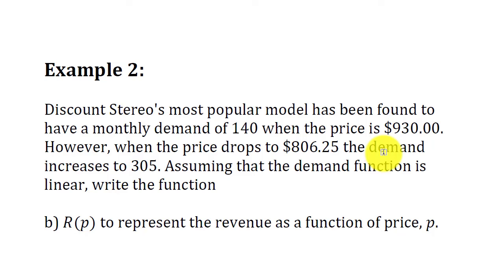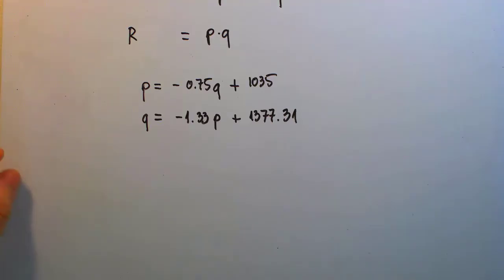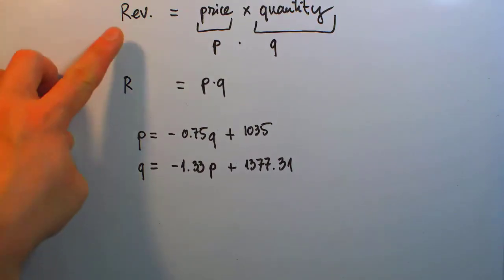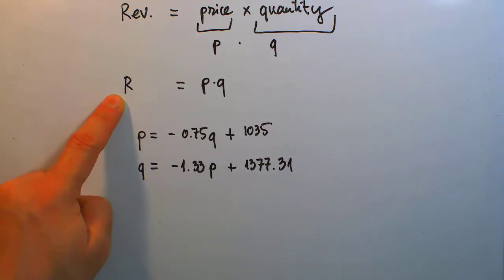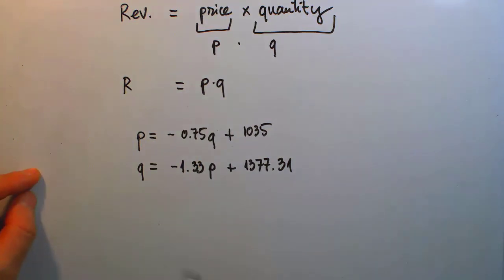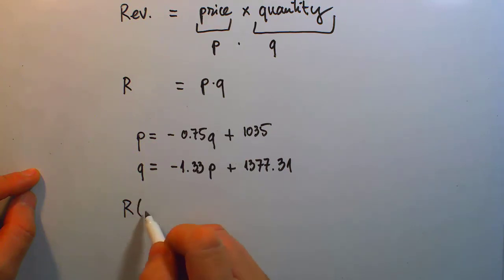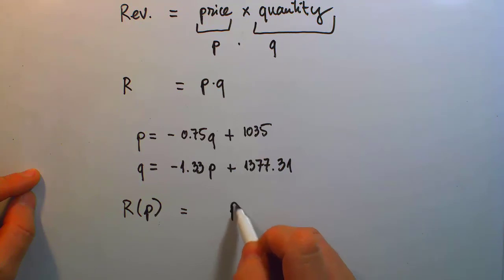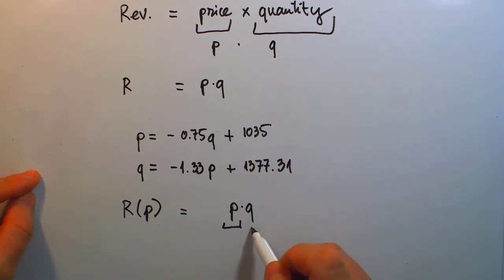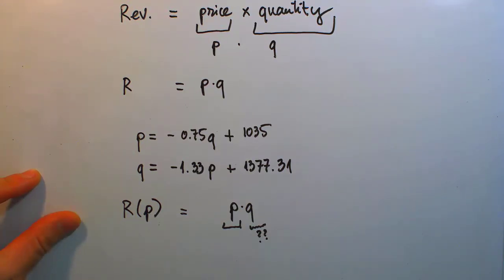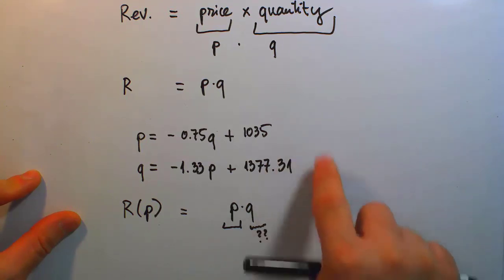Same example, but now in Part B the question changes: write the function R(P) — revenue as a function of price P. Again, revenue R = P × Q. Since we need to express R as a function of P, the variable P is already partly there in R = P × Q. But we still need to handle the Q expression. This is exactly the usefulness of having the demand written in two different forms.